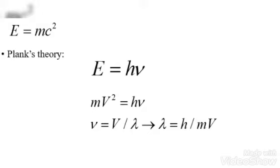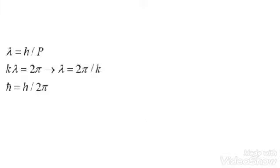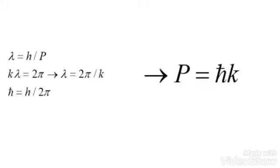This helps us to rewrite the equation for lambda, or wavelength, of quantum systems as you can see here. In 1923, de Broglie formulated that the momentum of a quantum system is related to the wavelength of the quantum system based on Planck's constant, as you can see here.